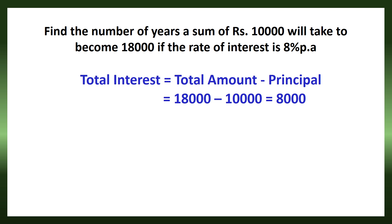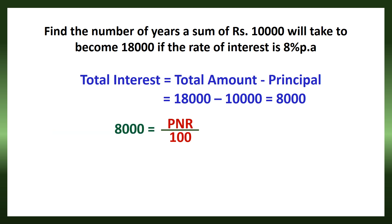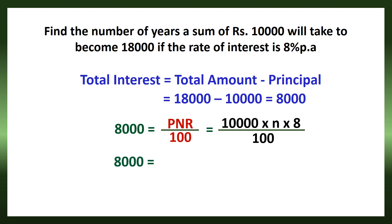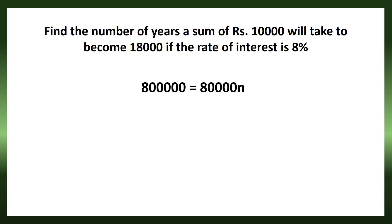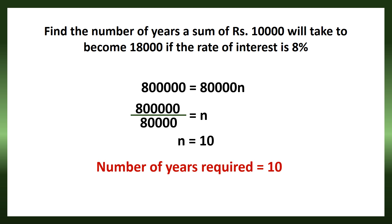Now, applying these values in the formula SI = PNR divided by 100: 8,000 equals 10,000 into N into 8 divided by 100, which gives 8,000 equals 80,000N divided by 100. Multiplying both sides by 100: 8,000 into 100 equals 80,000N, so 8,00,000 equals 80,000N. Therefore, N equals 8,00,000 divided by 80,000 equals 10. The number of years required for Rs. 10,000 to become Rs. 18,000 at 8% per annum simple interest is 10 years.